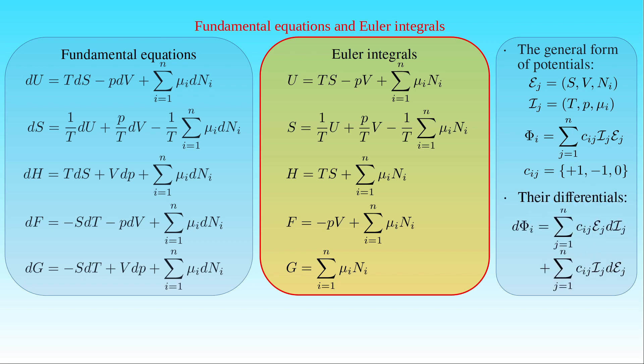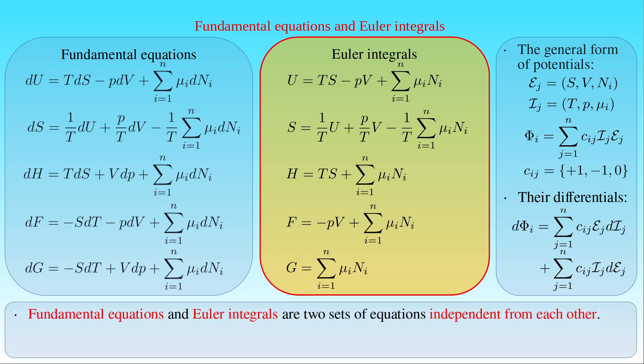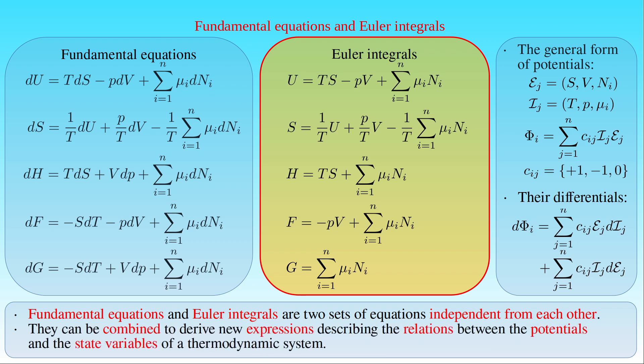We could assume the fundamental equations can be derived from the differentials of the Euler integrals. If we compute the differential of the potential Φᵢ, then dΦᵢ can be written as the sum of Cᵢⱼ times Eⱼ times dIⱼ, plus the sum of Cᵢⱼ times Iⱼ times dEⱼ. The right-hand side has terms with both differentials of intensive and extensive properties. This is not the case for the first fundamental equation, which contains only differentials of extensive properties. Therefore, the fundamental equations cannot be derived alone from the differentials of the Euler integrals — they are two independent sets of equations.